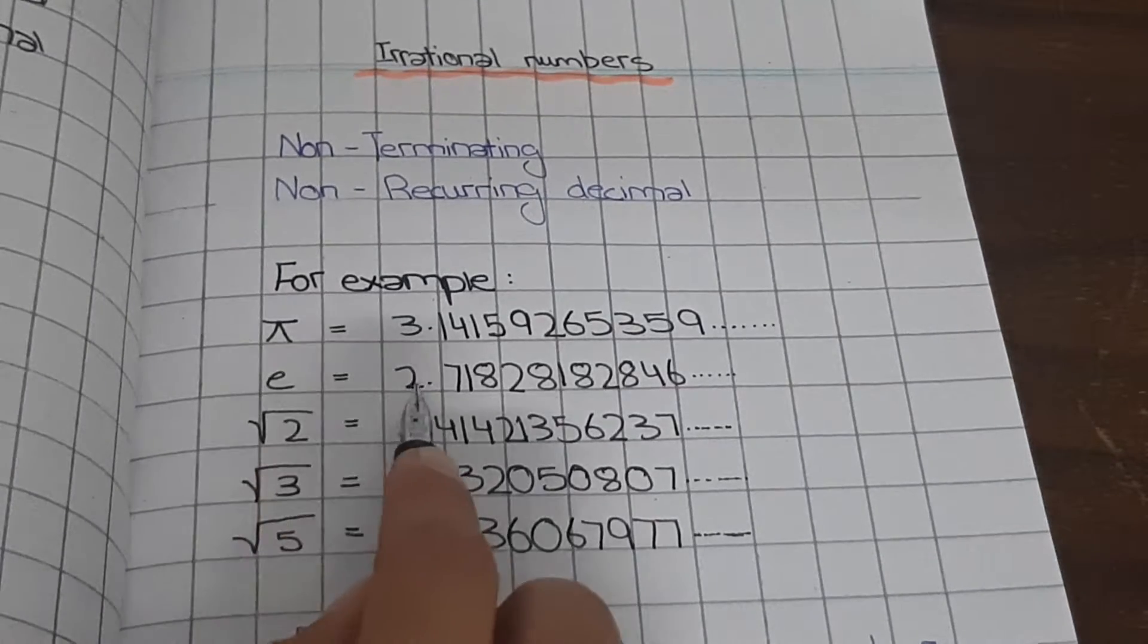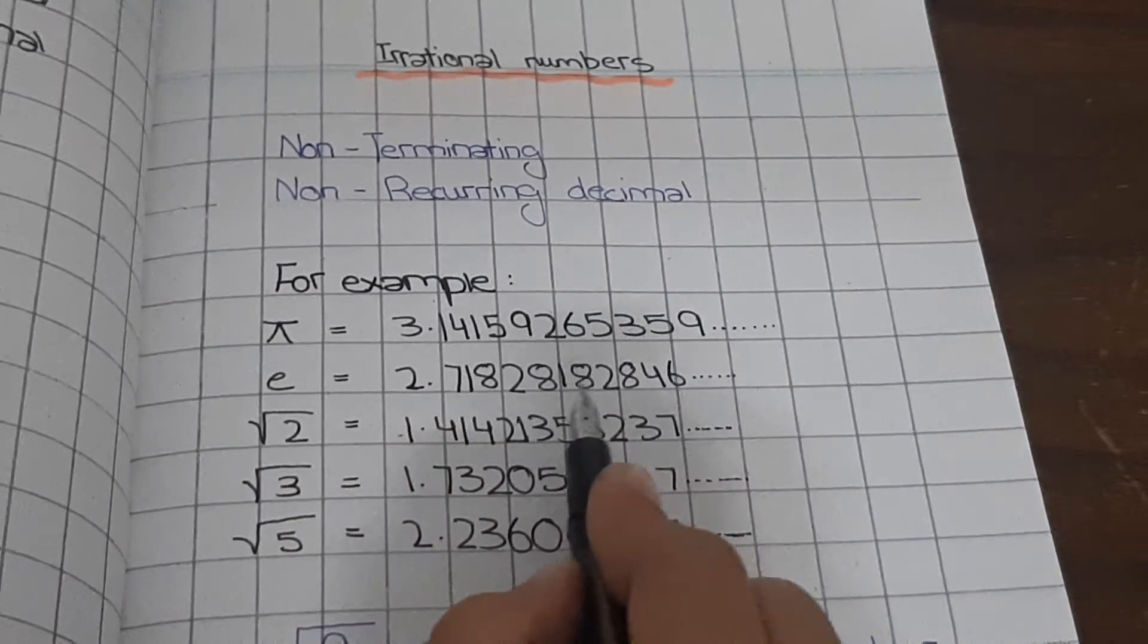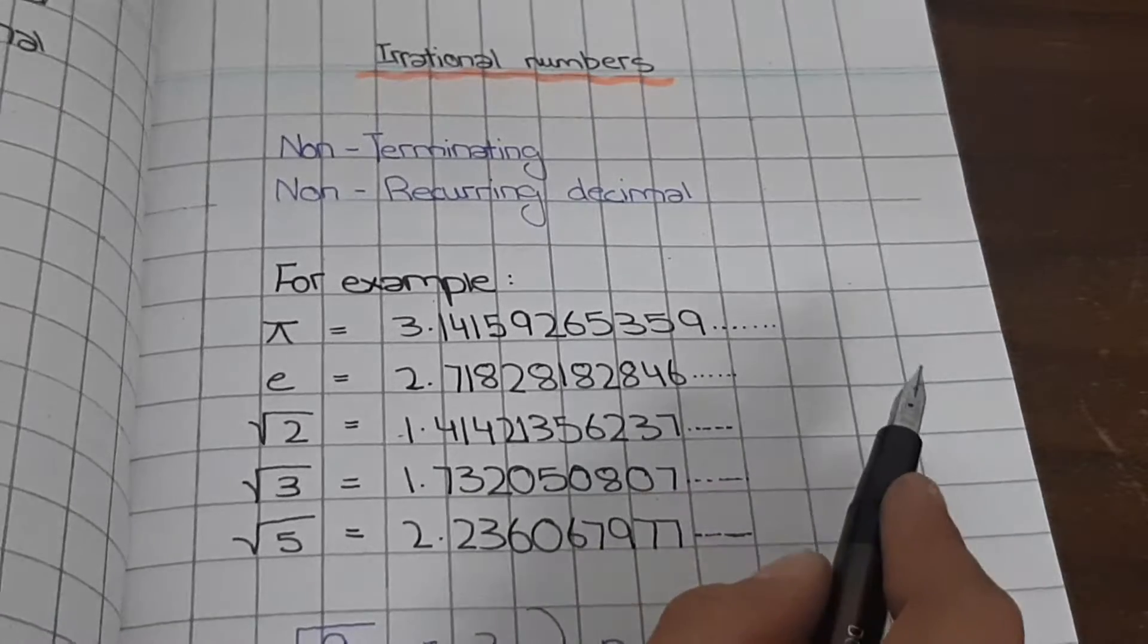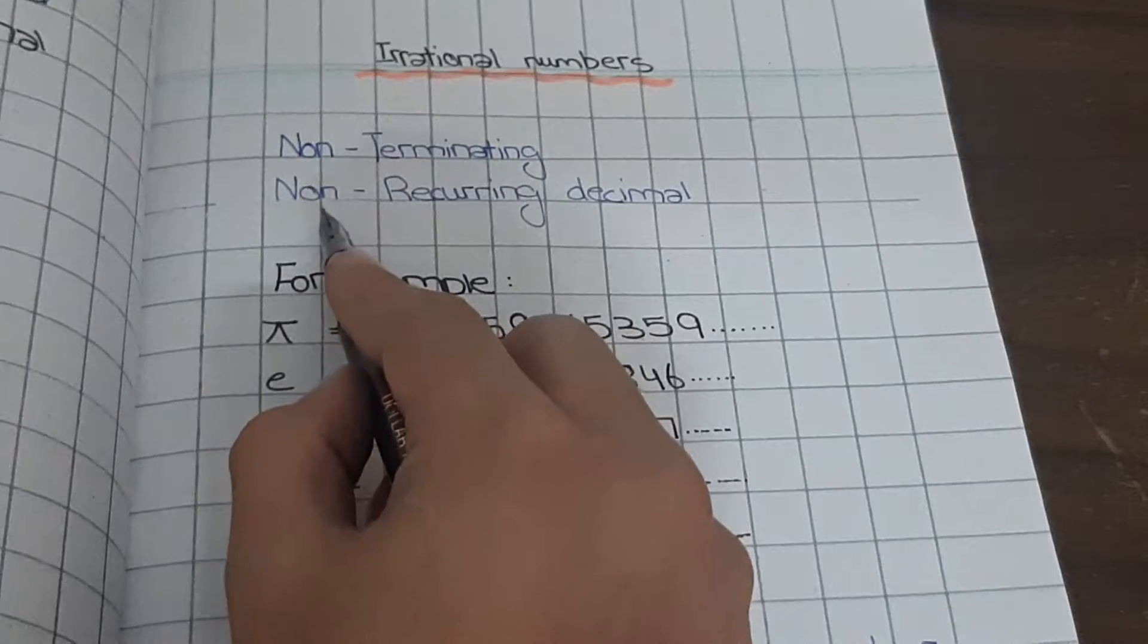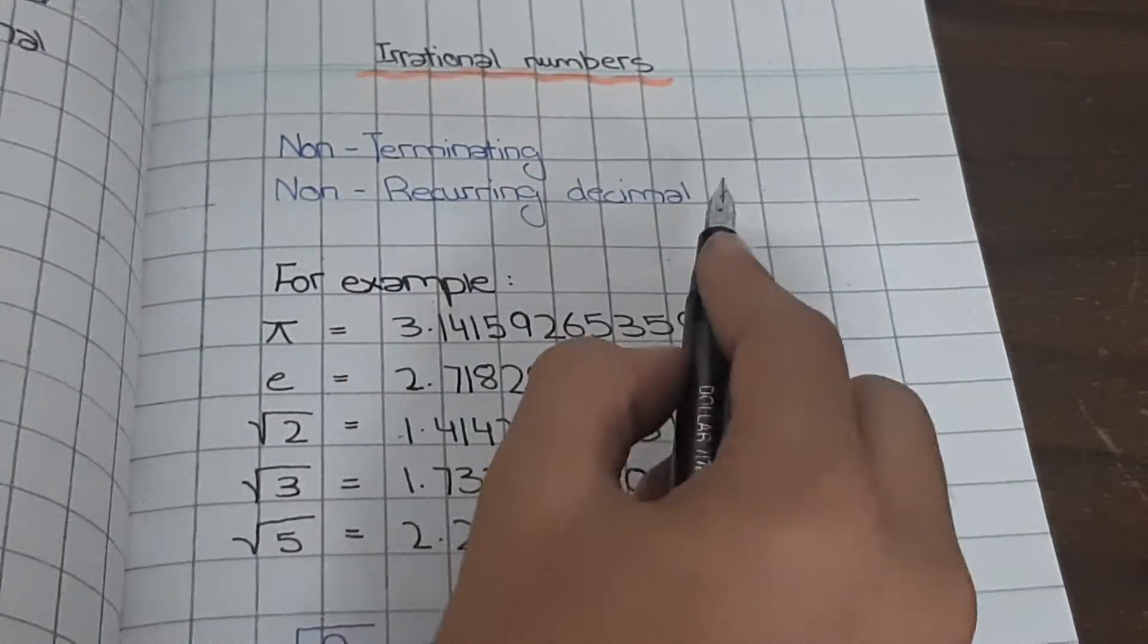The value of e, 2.71828182846. This is also an irrational number because of non-terminating and it doesn't recur decimal.